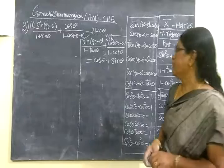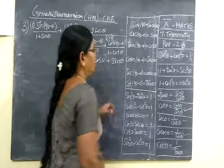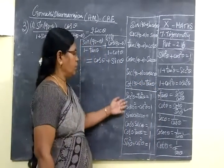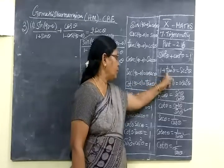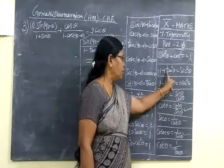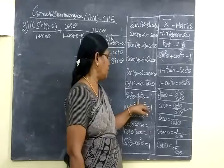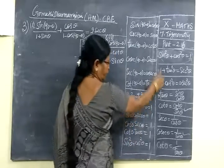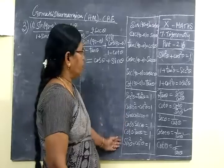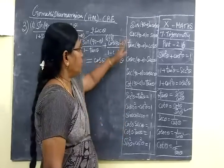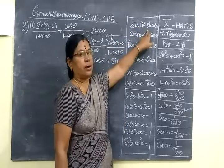Now we see part 2. The economics of ratios for returns — it is one of the aggregates. Sec squared theta plus tan squared theta, minus tan squared theta. It is one of the aggregates. Sin of 90 minus theta equals cos theta.